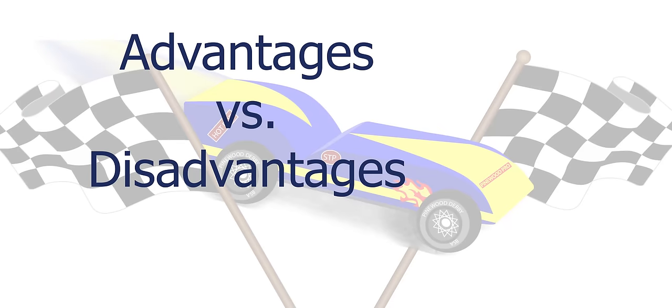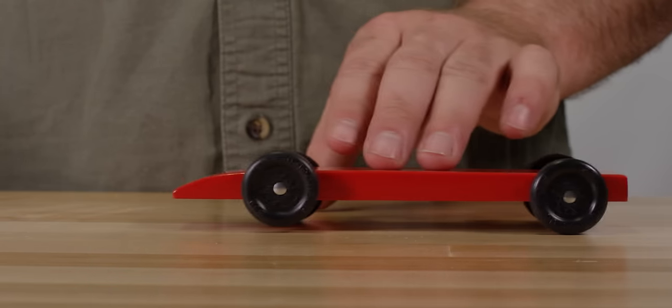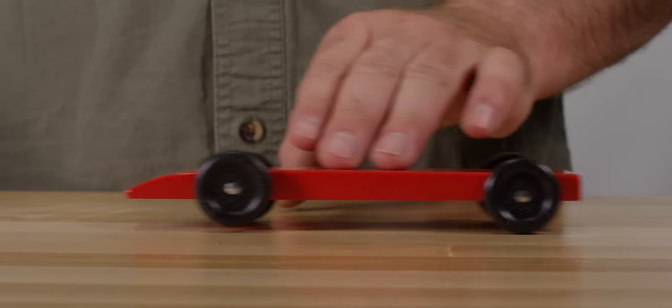This video will not cover the advantages or disadvantages of each method because you can read all about rail riding in Pinewood Pro's Winning Pinewood Derby Secrets book, or read our Rail Rider tutorial guide on www.pinewoodpro.com. See links in the video description below. This video covers how to make your car steer where you want it to steer.